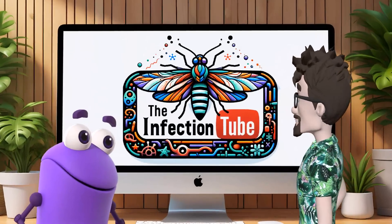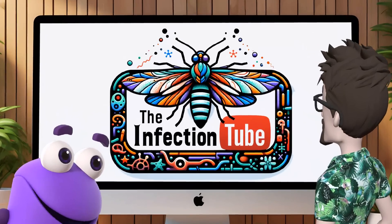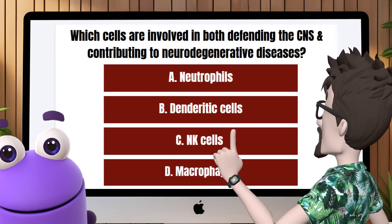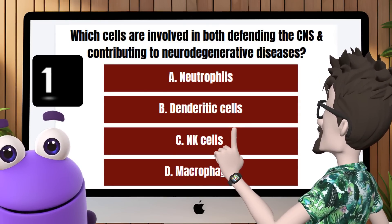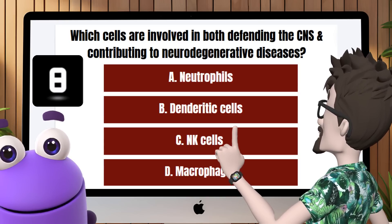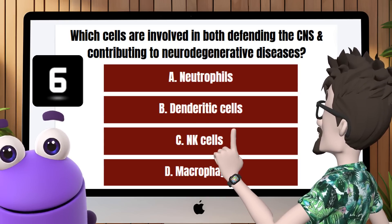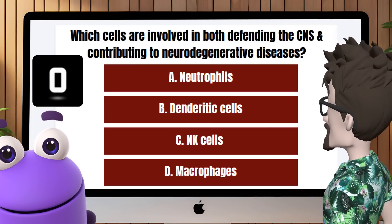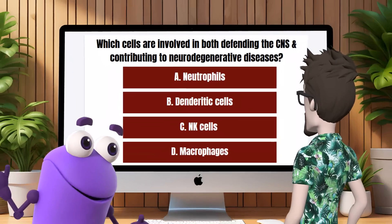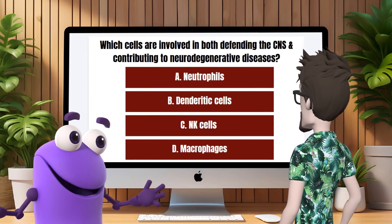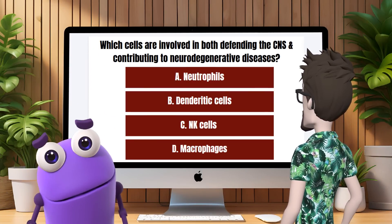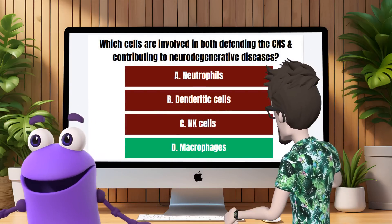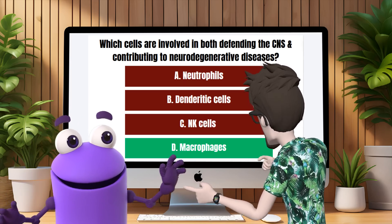Cella, are you ready to test your knowledge? I'm ready, Dr. Max. Let's do this. Question 1: Which cells are involved in both defending the central nervous system and contributing to neurodegenerative diseases? I think it's B, dendritic cells. Good try, Cella, but the correct answer is D, macrophages. Macrophages, particularly microglia in the central nervous system, are involved in defense but can also contribute to chronic inflammation and neurodegenerative diseases.